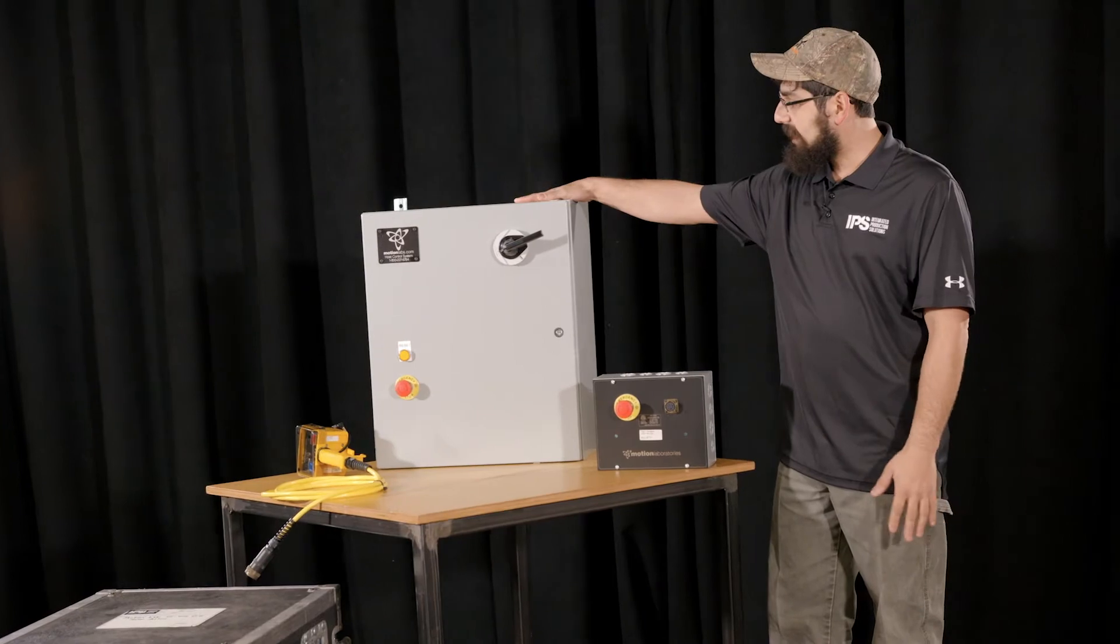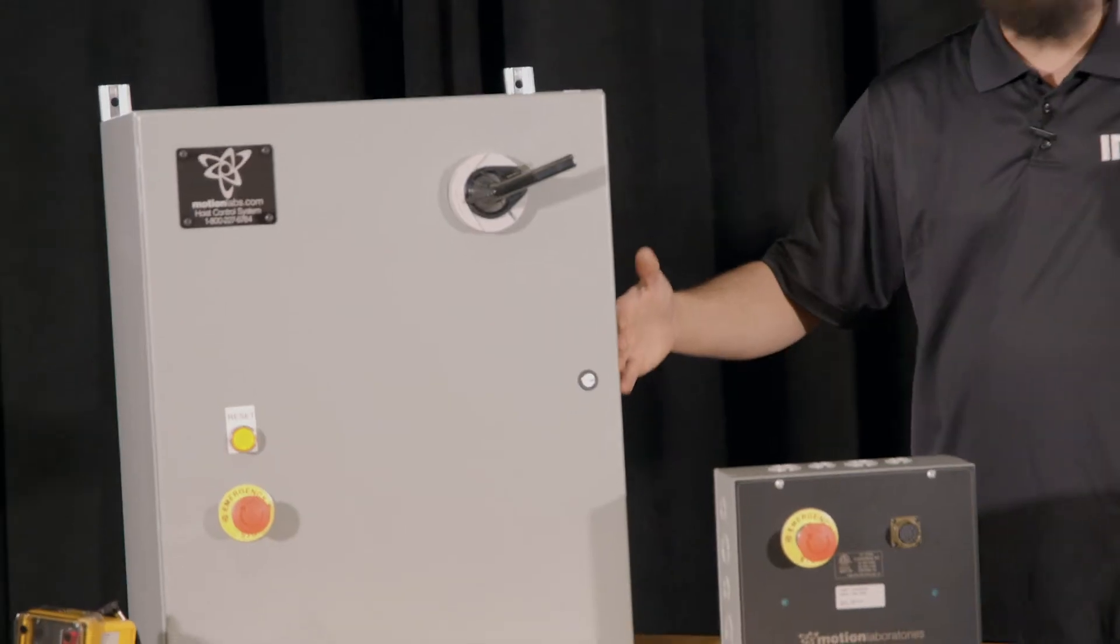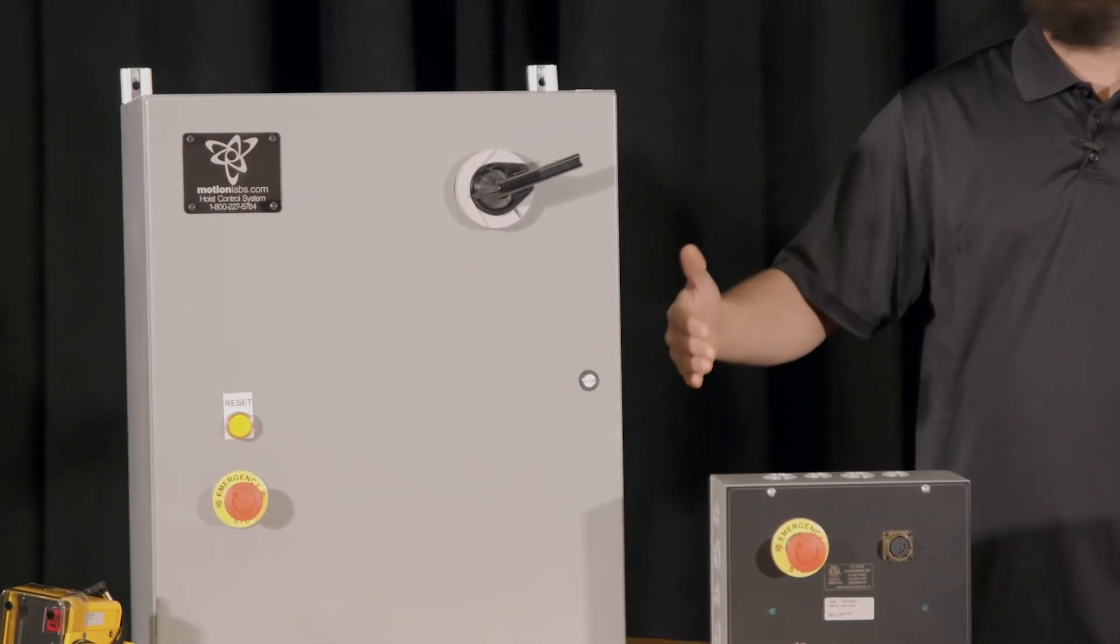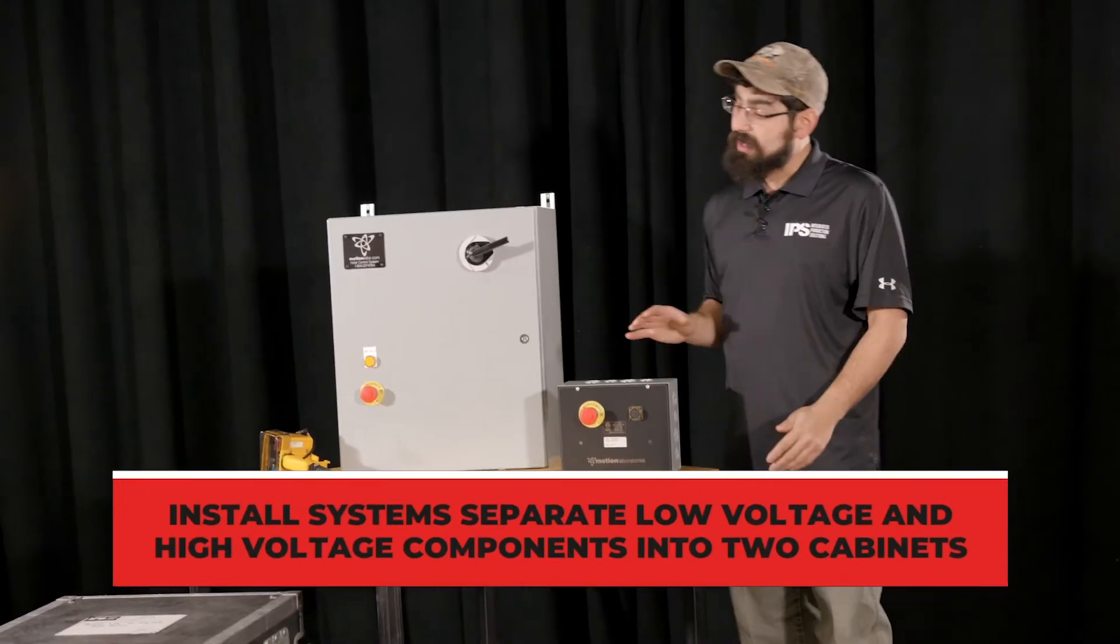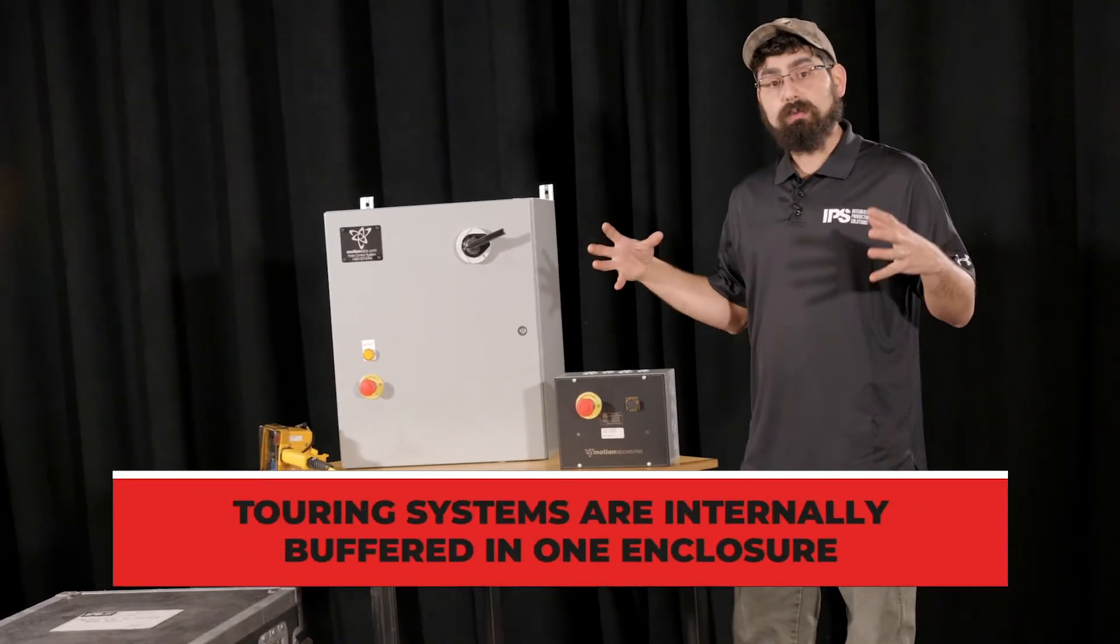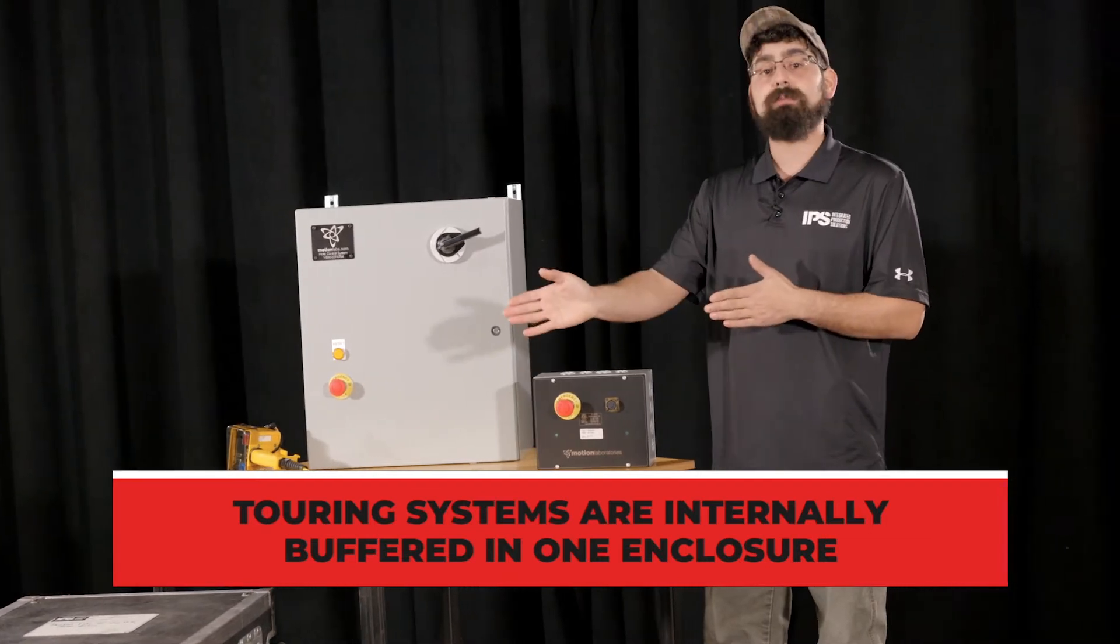Some of the things you may notice is that they look absolutely completely different. You have a large case here and this normally has another proper case with it that has the low voltage components separate from the high voltage components, whereas a touring controller will actually have it all in one case and it's internally buffered between the two.